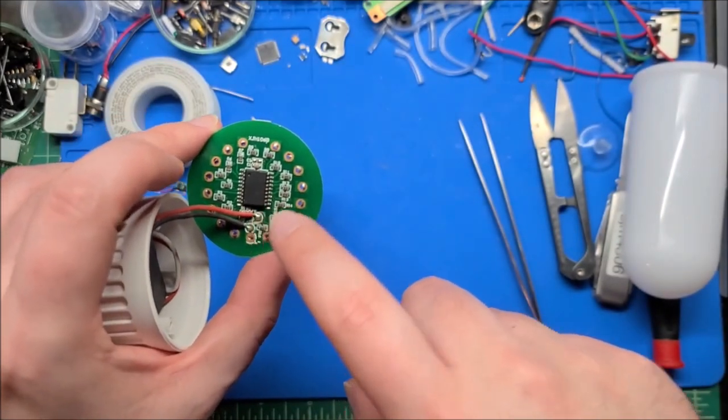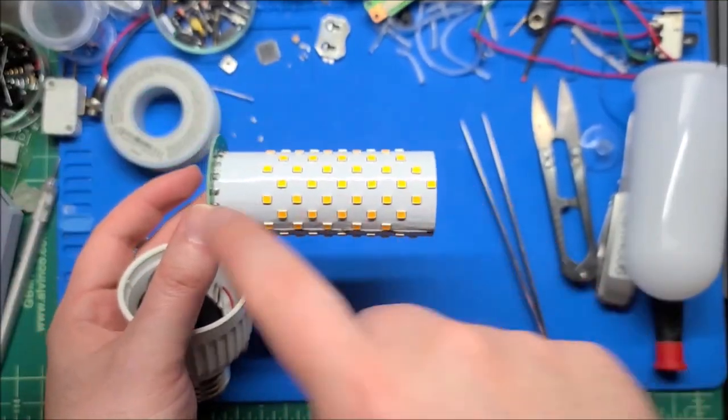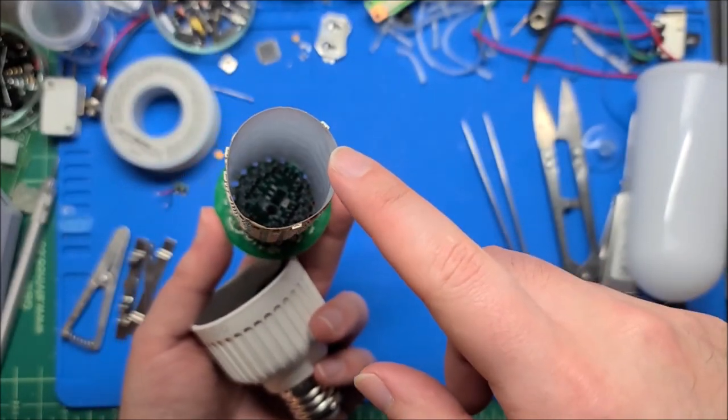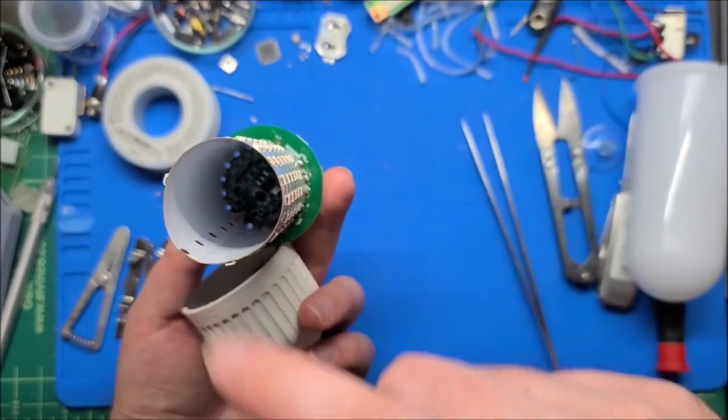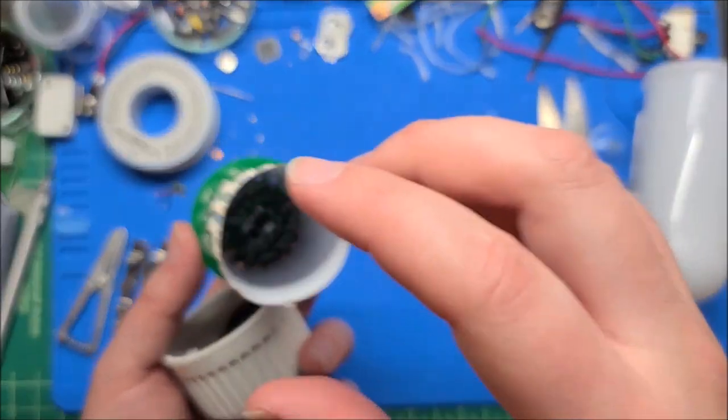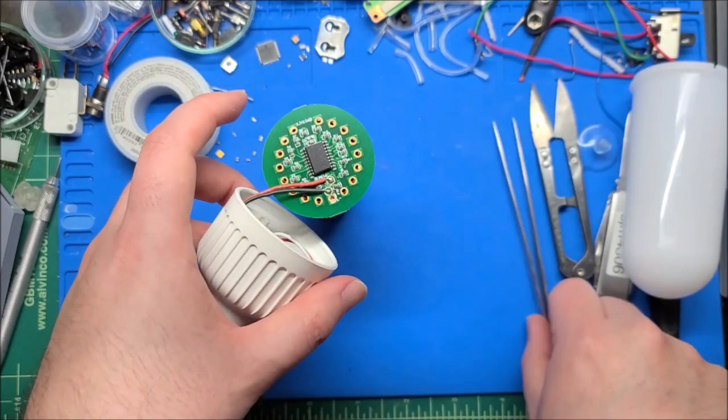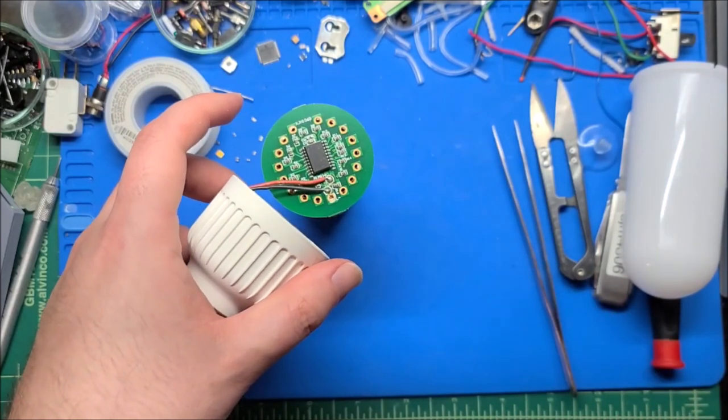So this chip is driving transistors to drive like the rows and columns of this matrix, which makes sense. I mean, yeah. And that's kind of it, I guess. Really not much to this. So let me just desolder this and wire this up to like a USB cord.